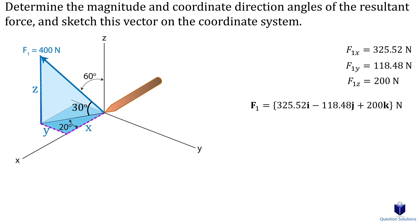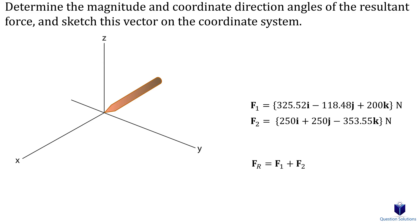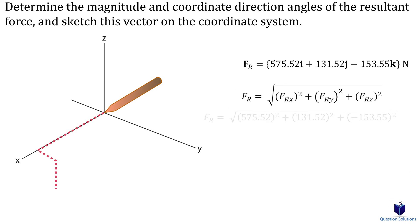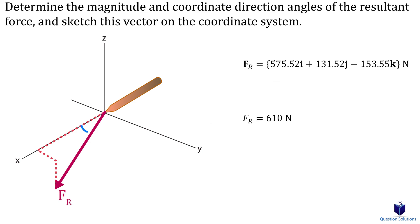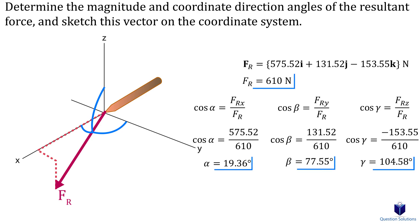Remember to use proper positive and negative signs. Since the y component is along the negative Y axis, it will be negative. For force F2, since all angles are coordinate direction angles, we use cosine to write it in cartesian vector form. The resultant force is the addition of both forces — add I to I, J to J, and K to K components. Then we find the magnitude and plug in our coordinates to find the coordinate direction angles using the inverse cosine. Those are our answers.